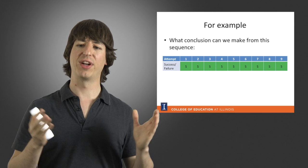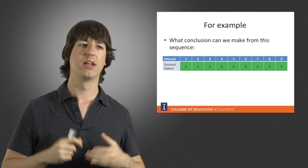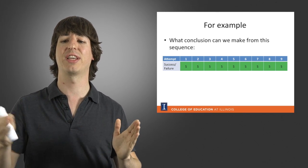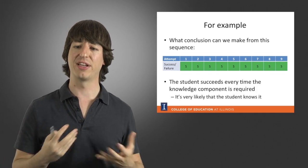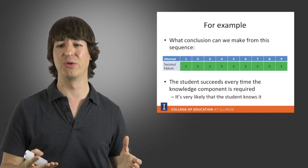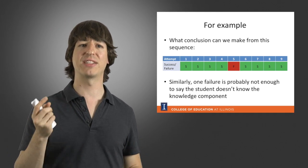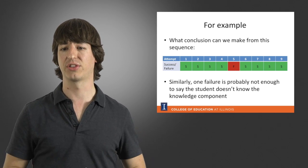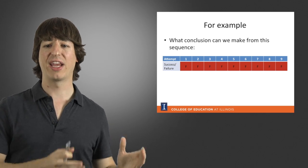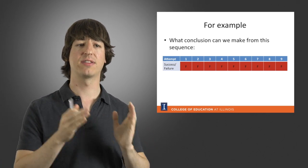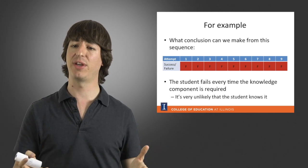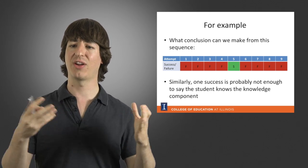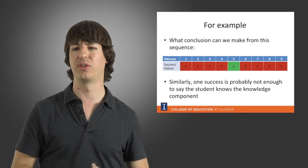If we start with a sequence of nine attempts at applying a knowledge component and the student succeeded every single time, we can conclude it's very likely the student knows this knowledge component. Similarly, if the student makes one mistake out of nine attempts, it's still very likely they know it. On the other hand, if someone fails all nine attempts, it's very likely they don't know the component. Similarly, if they have one success out of nine attempts, it's still very likely they don't know it.